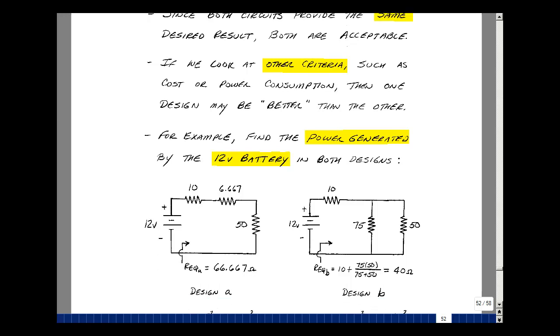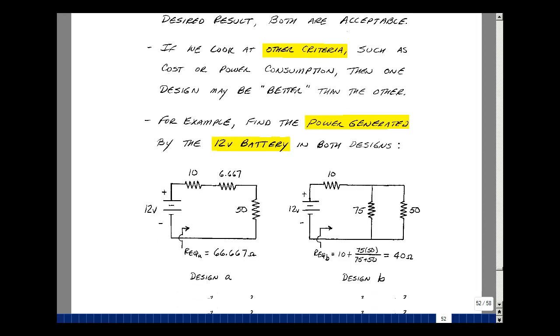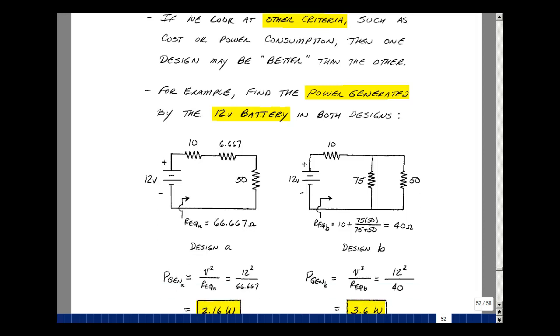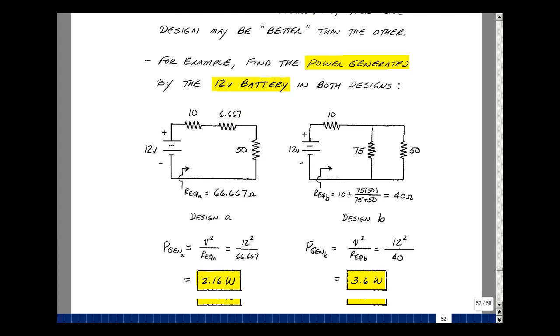In our first circuit we had 6.66 added in series with our 10 ohms. So the equivalent resistance seen looking in here is the sum of 10, 6.667 plus 50. And that's 66.667. So take V squared over R and you get 2.16 watts.